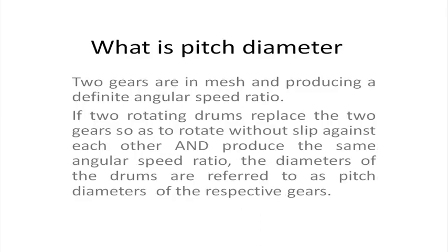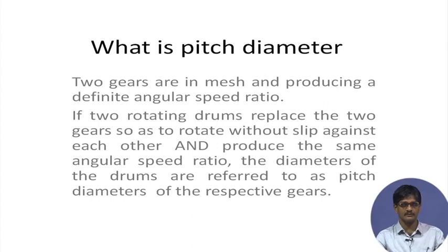To start with, we had discussed the pitch diameter. The pitch diameter is a virtual diameter — it cannot be physically or tangibly identified on the gear. For example, the outside diameter of a gear can be physically pointed out, but the pitch diameter does not exist that way. Suppose two gears are in mesh and they are producing a definite angular speed ratio — a particular RPM ratio between the two rotating gears.